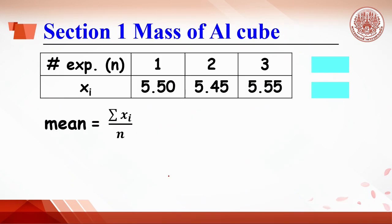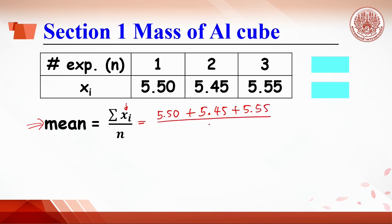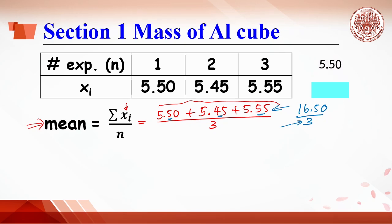What is the significant figure of the average weight of the cube? The average is calculated as the sum divided by the number of experiments. Replacing with values: (5.50 + 5.45 + 5.55) divided by 3. The addition on top yields two decimal places, giving 16.50. Divided by 3 — where 3 comes from counting, not measuring, so significant figure rules do not apply — the average weight of the cube is reported with two decimal places as 5.50 grams.